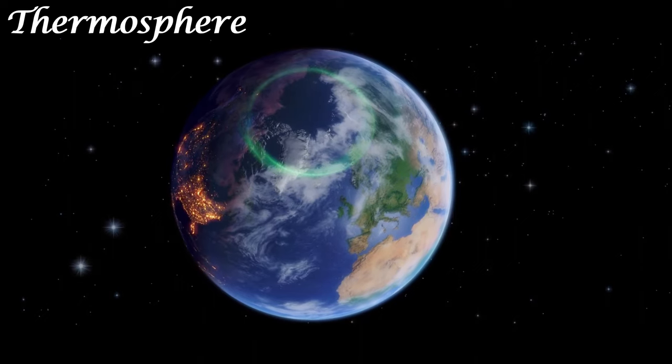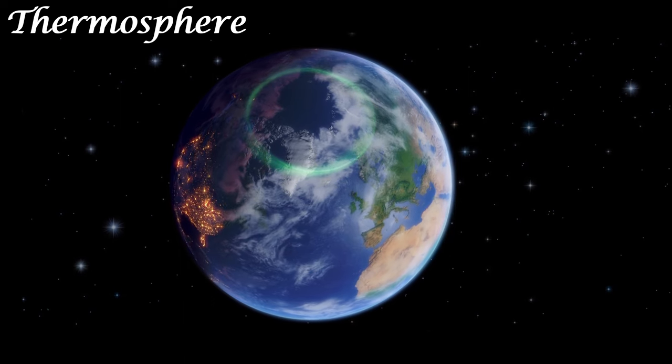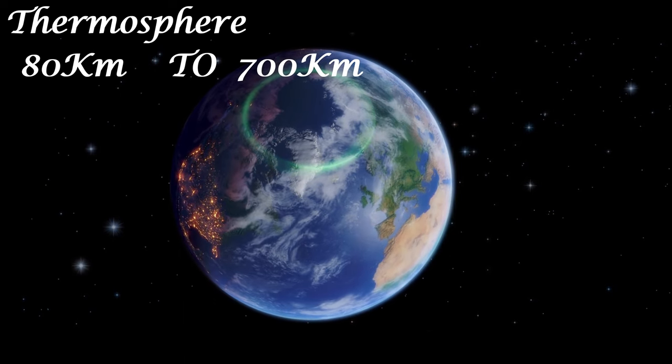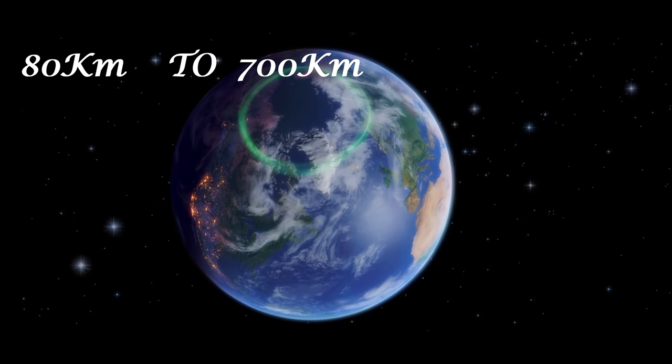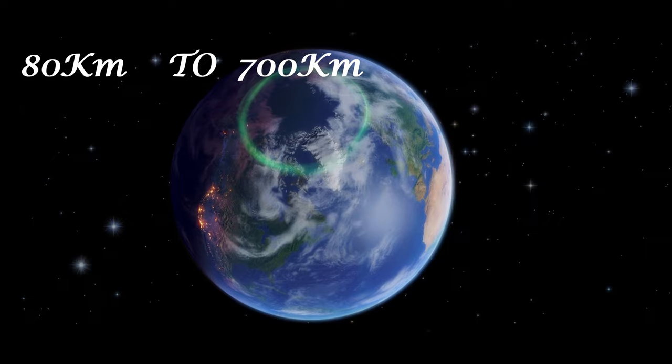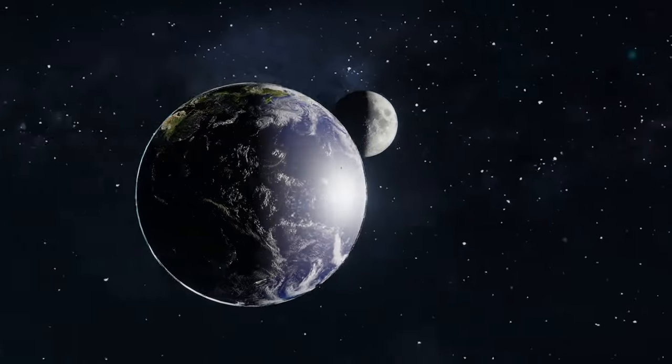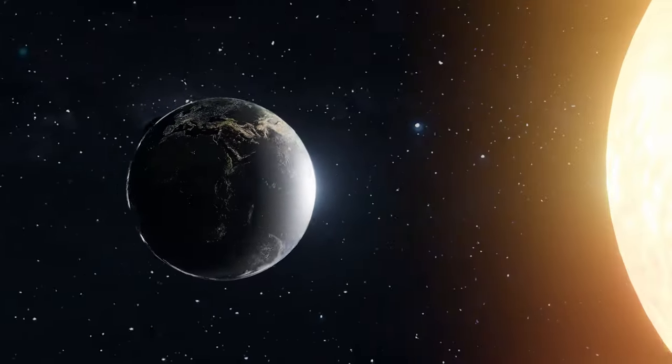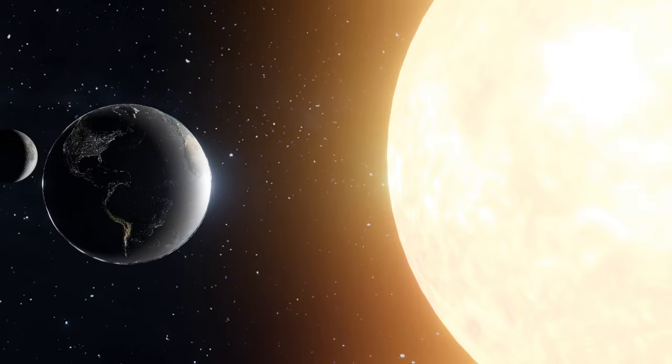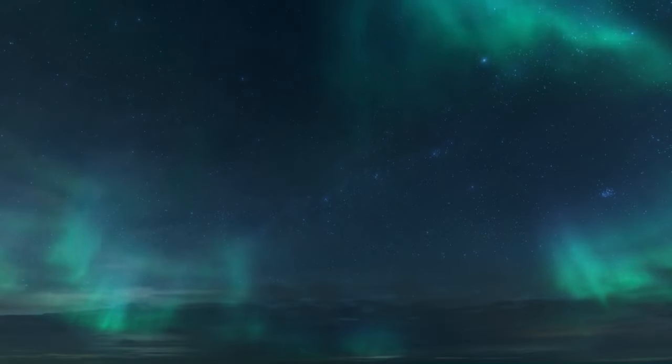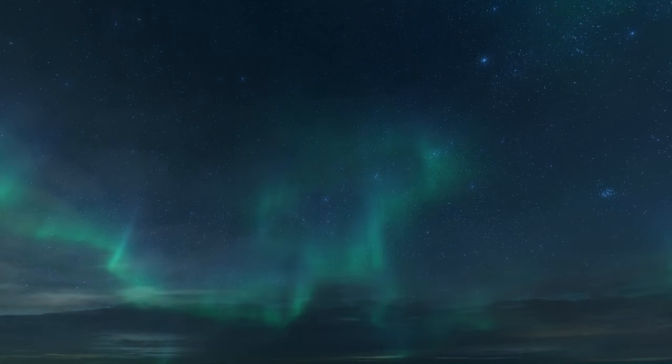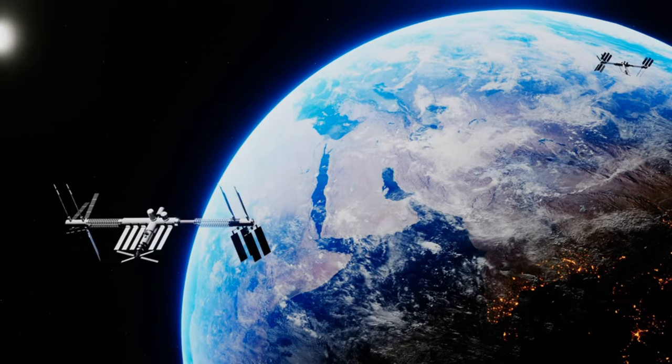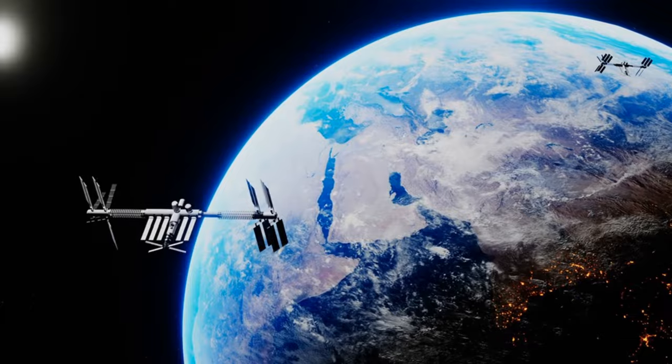Thermosphere: Located between about 80 and 700 kilometers, 50 and 440 miles above Earth's surface is the thermosphere, whose lowest part contains the ionosphere. In this layer, temperatures increase with altitude due to the very low density of molecules found here. It is both cloud and water vapor free. The aurora borealis and aurora australis are sometimes seen here. The International Space Station orbits in the thermosphere.